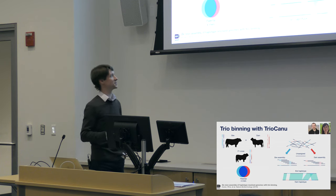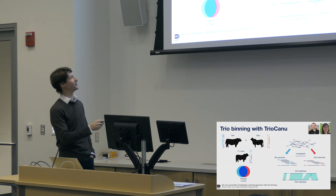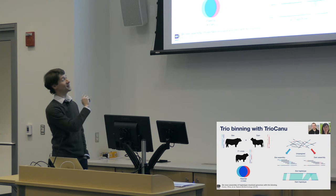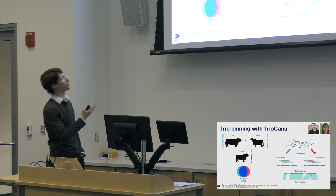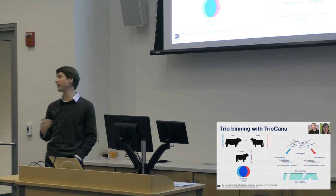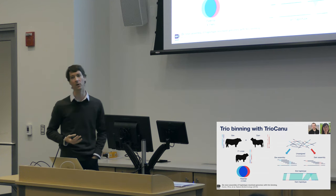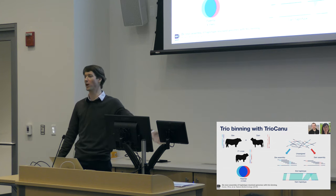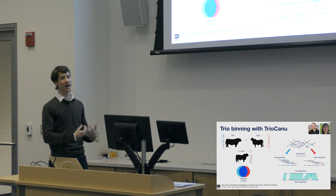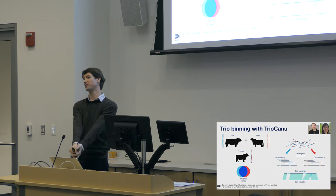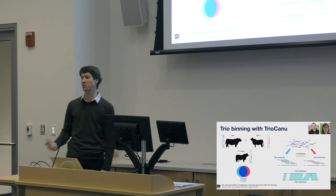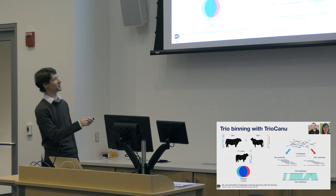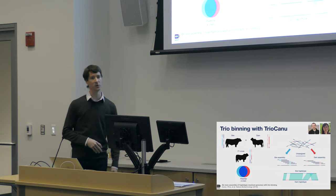We did this for cattle crosses and got fantastic results. The caveat is the more diverged the parents are, the more markers you'll find. Humans tend to be quite inbred - about 0.1% heterozygosity - whereas these cattle were around 0.7%, so you have many more markers. We've since tried it on human, and it is also possible, just a little bit more difficult. The nice consequence is you get two FASTA files for every chromosome - chromosome 1 mom, chromosome 1 dad. If you want to find heterozygous structural variation, you just align those two FASTA files to each other and all the variation pops out: SNP variation, structural variation, very precise.